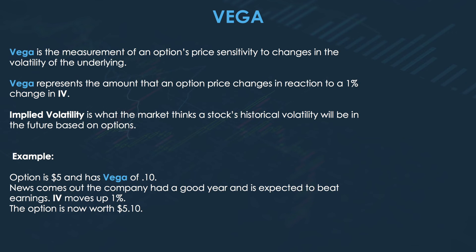With implied volatility moving up, since the momentum of the option is more likely to go in your way, you're going to pay more for that option. This is why people betting on earnings position themselves much farther out — so they can buy that option without elevated implied volatility. If you buy an option for earnings the day right before they report, you're going to be paying heavily for that implied volatility because everyone's piling in. Everyone thinks Amazon is going to go up from earnings, they pile in, implied volatility moves up, and the price of your option moves up as well.